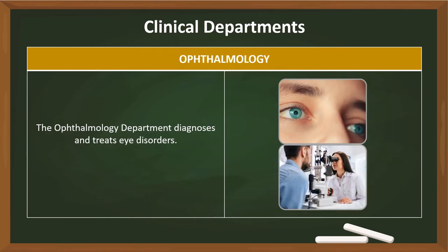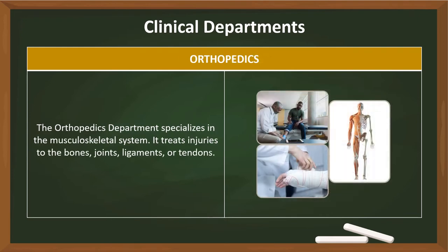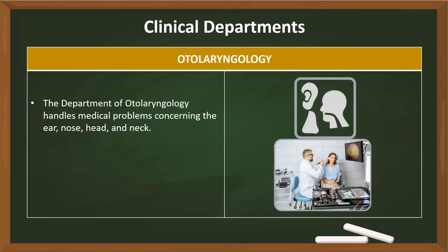The ophthalmology department diagnoses and treats eye disorders. The orthopedics department specializes in the musculoskeletal system — it treats injuries to the bones, joints, ligaments, or tendons. The department of otolaryngology handles medical problems concerning the ear, nose, head, and neck.